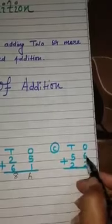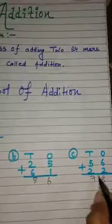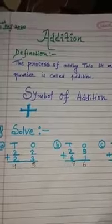Again, six plus two, eight. And five plus two, five, six, seven. In this way, you have to solve it in your maths copy.